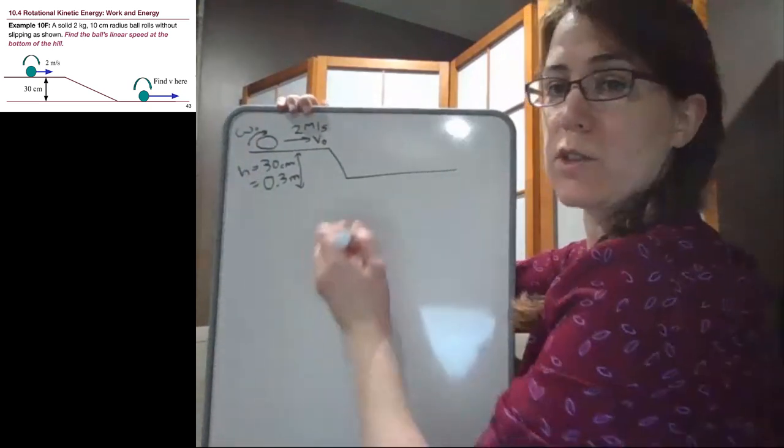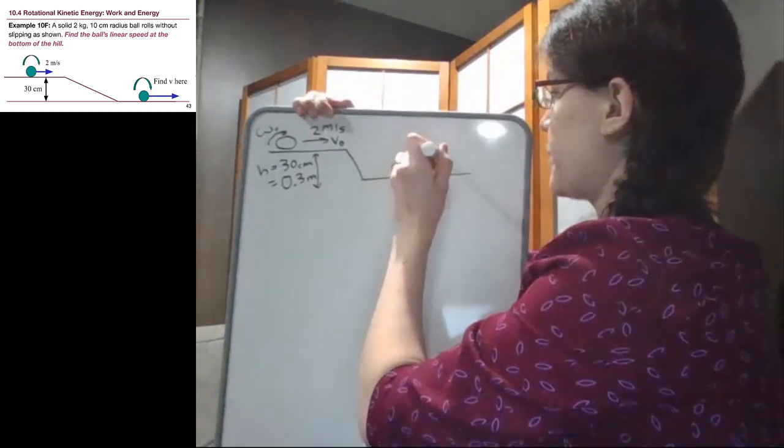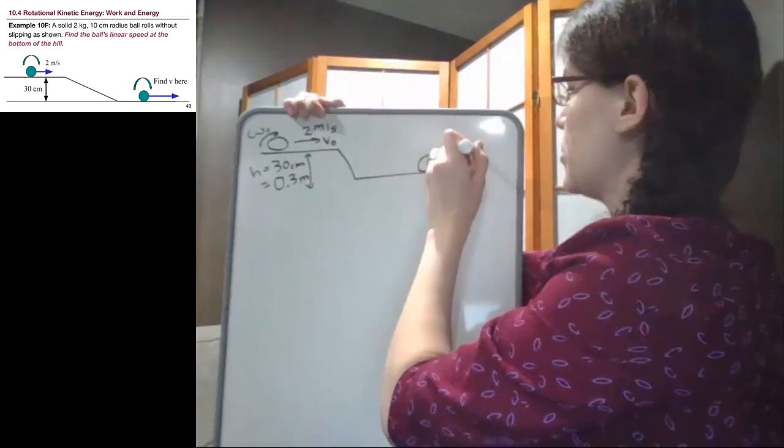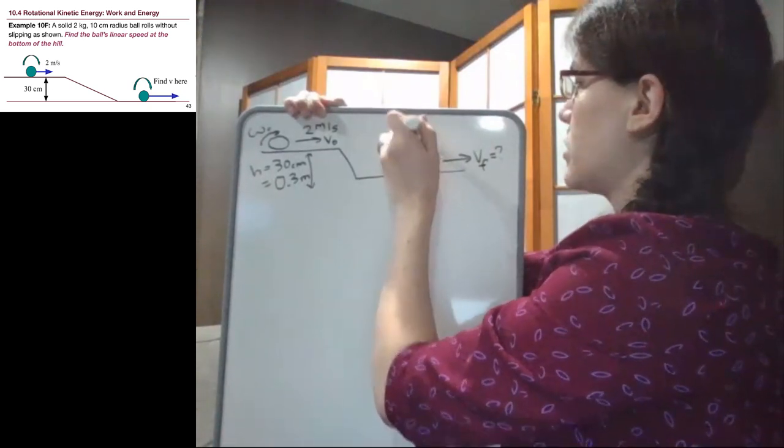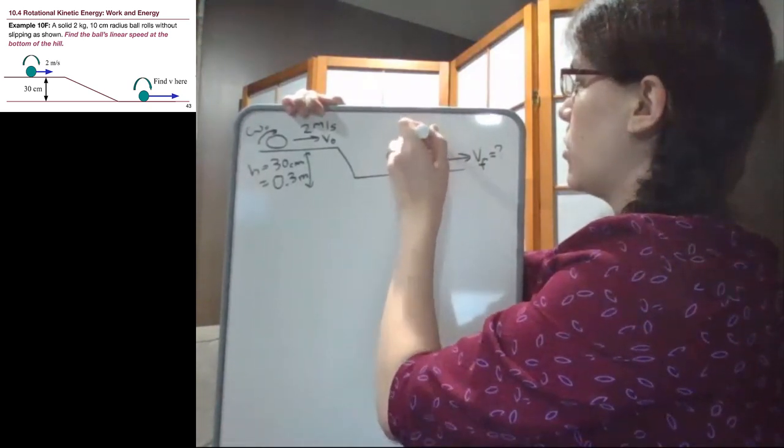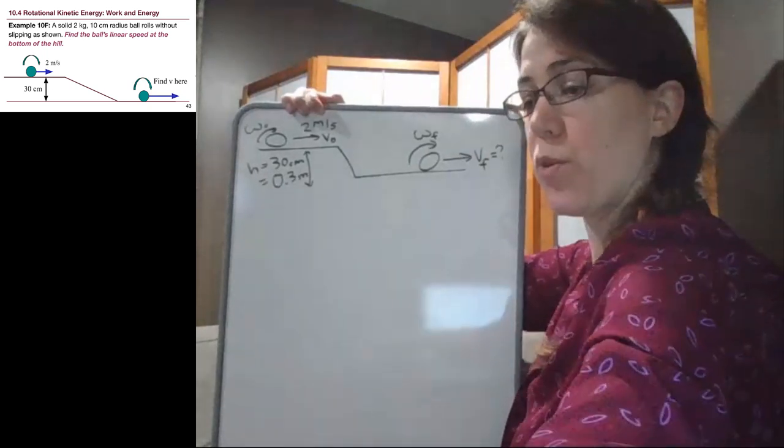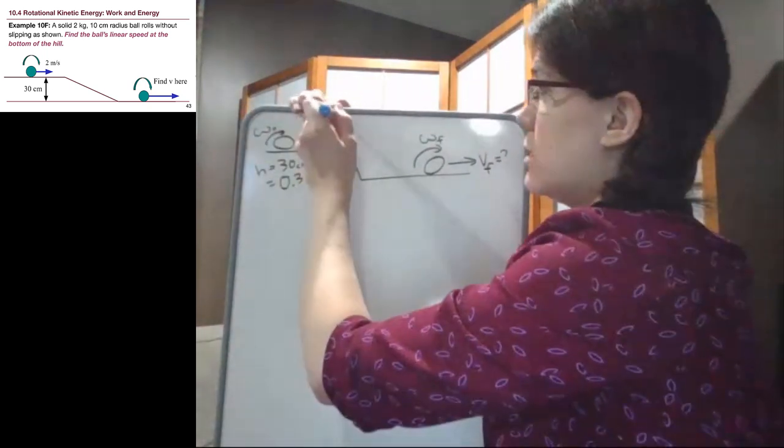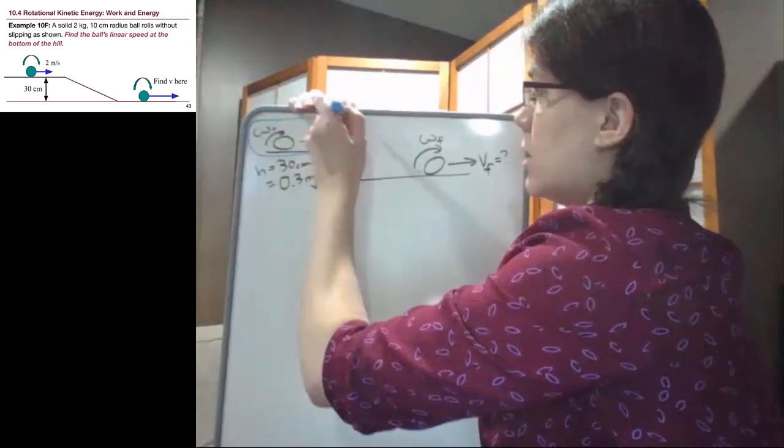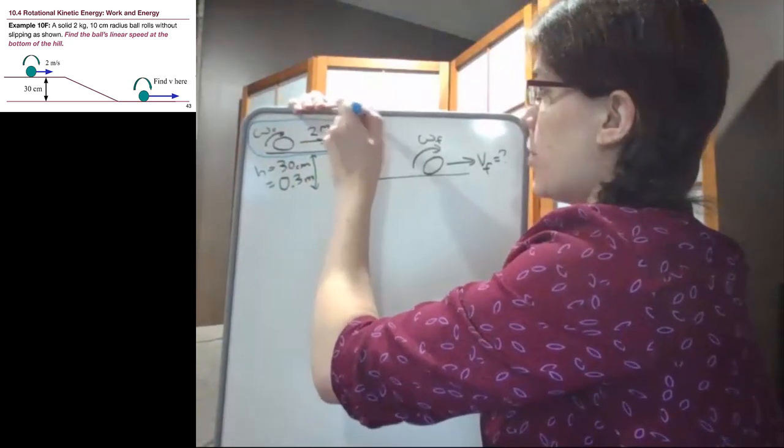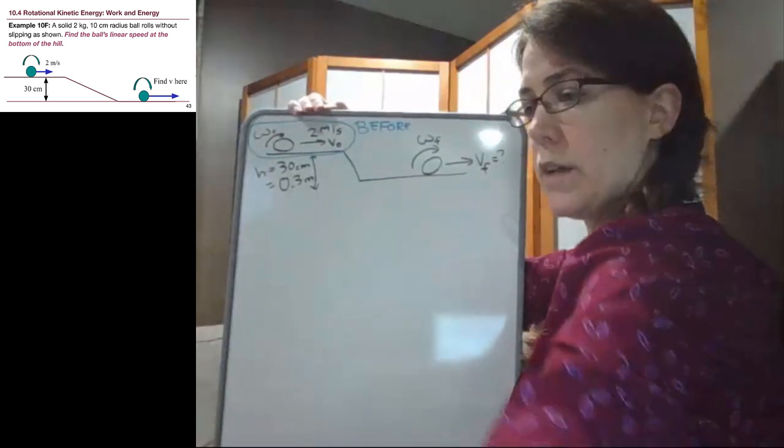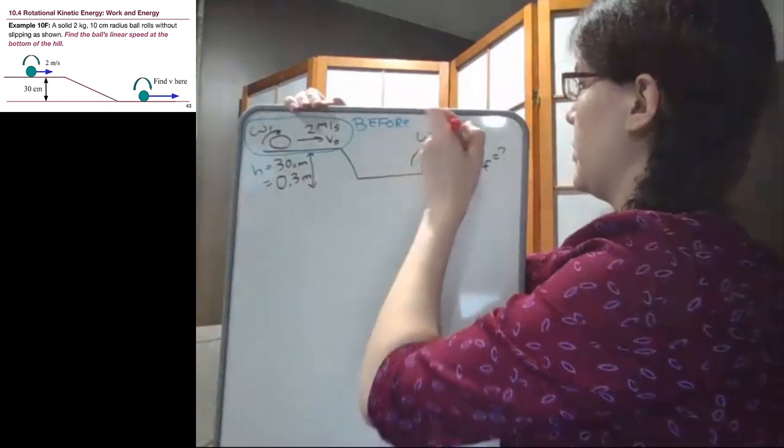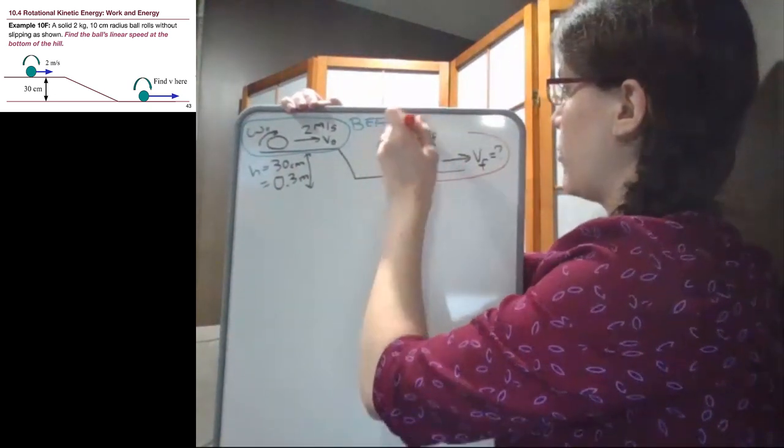Then we're asked to find the ball's speed at the bottom of the hill when it is moving at some unknown final speed. When we look at the before and after situations, this is the before at the start of the hill, and this is our after at the bottom.